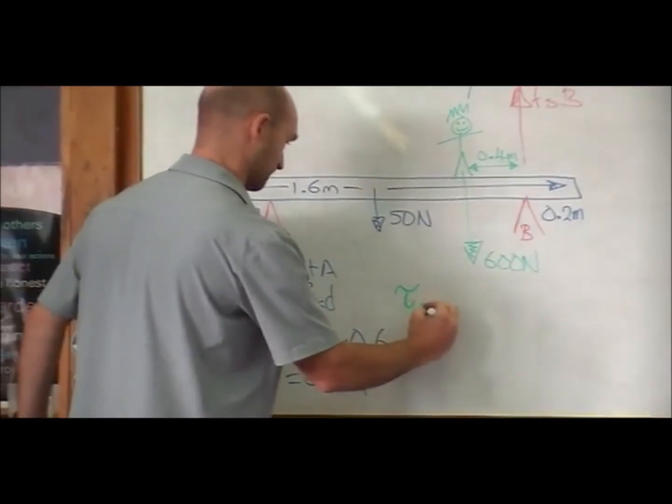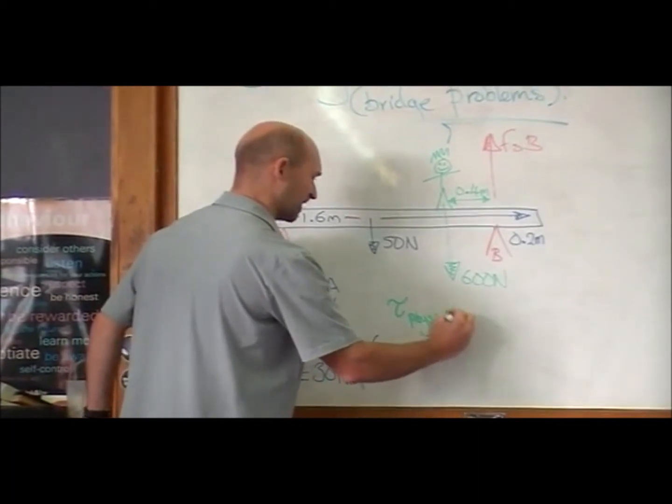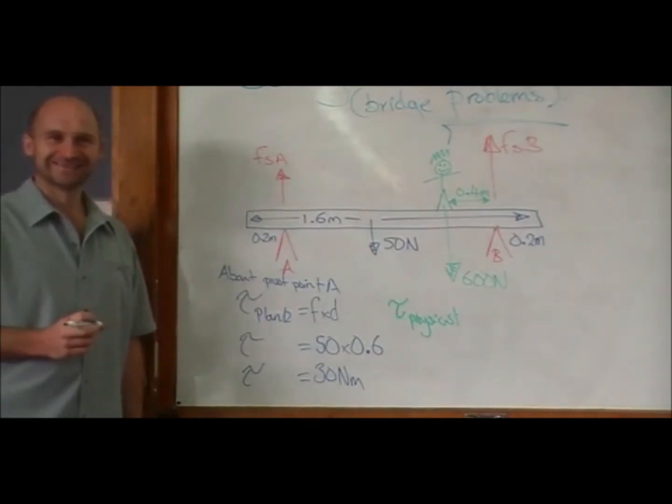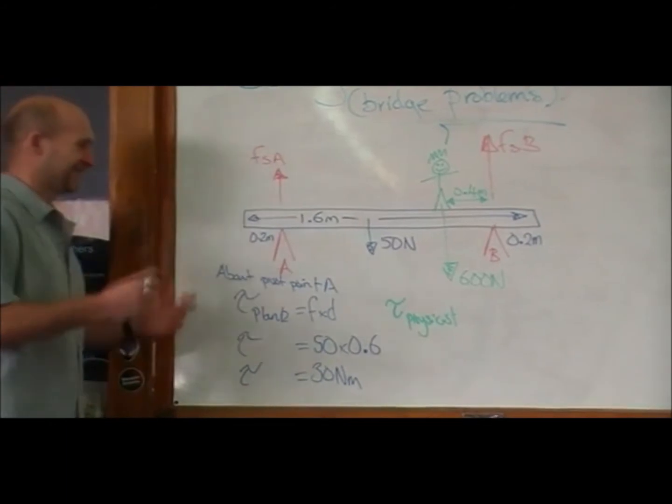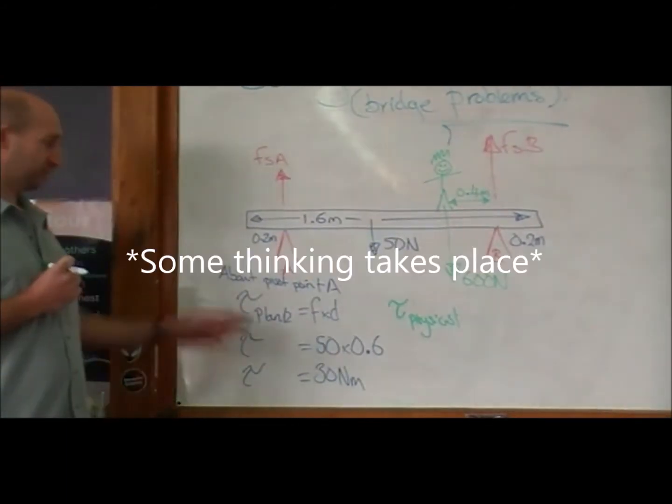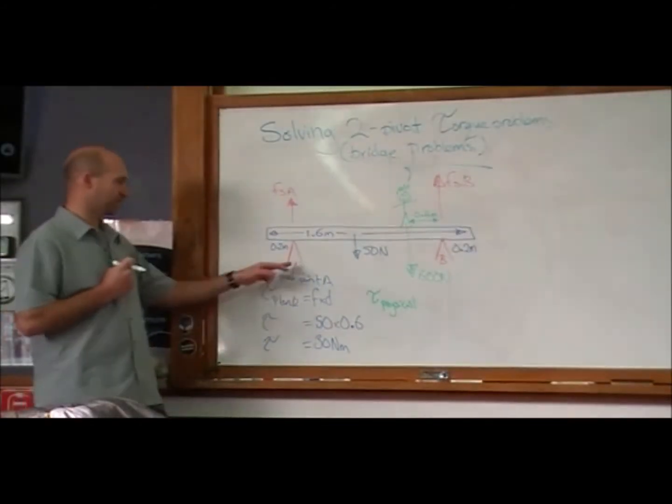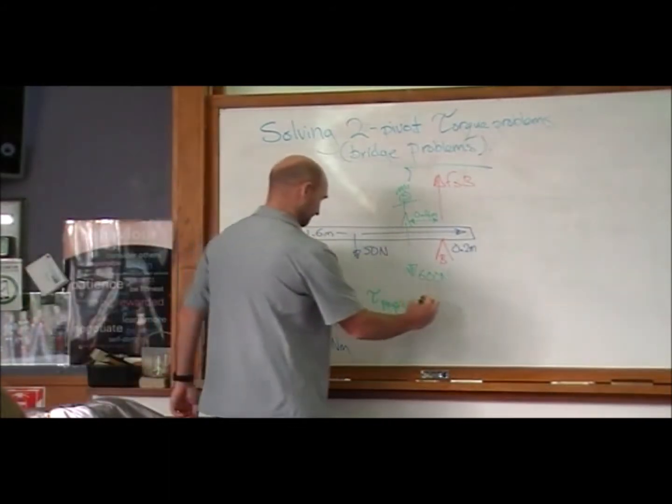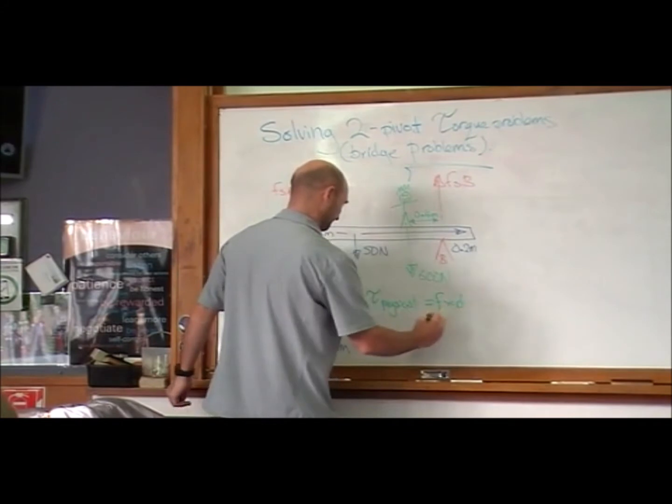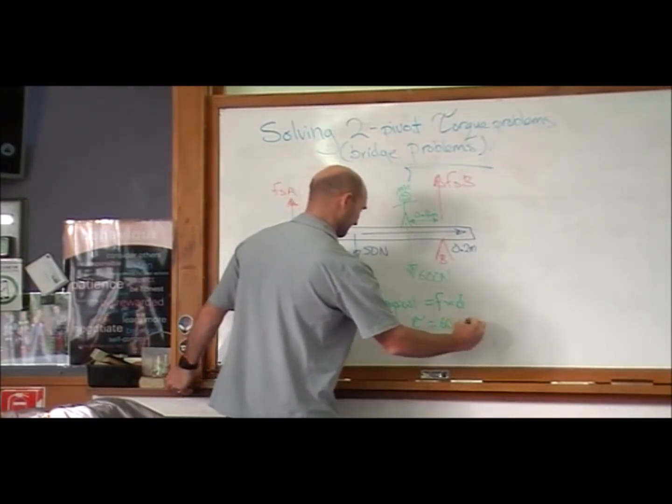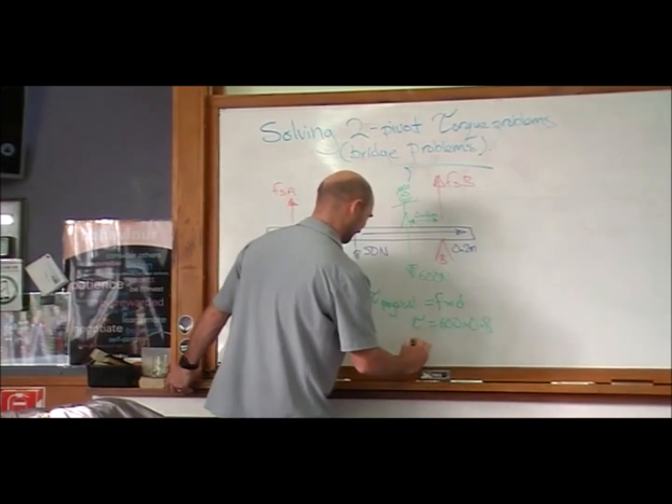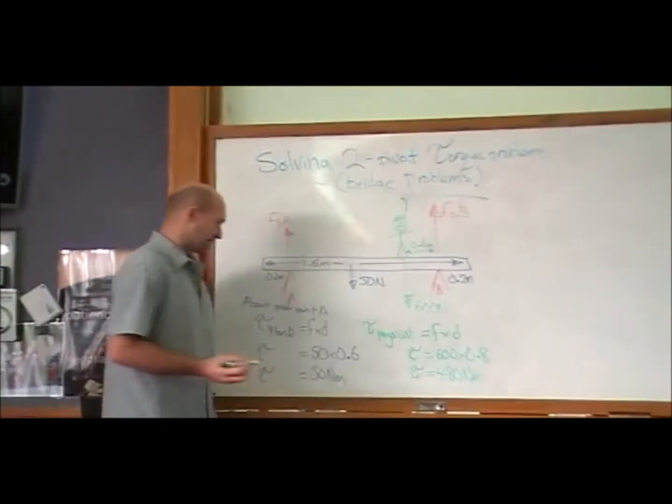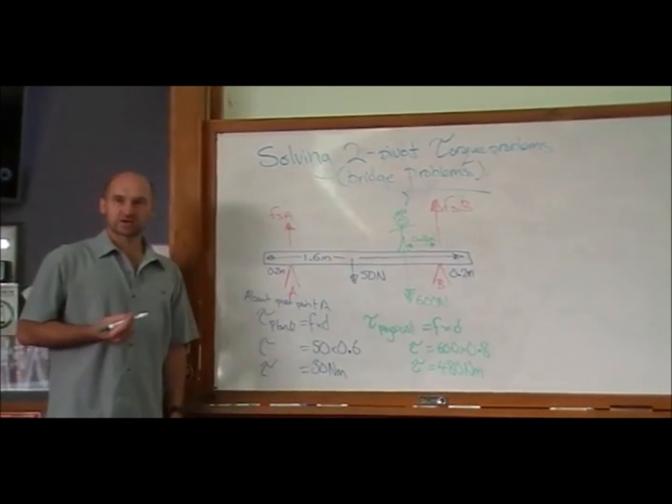And what about the torque of the brave physicist? Brave... don't you mean racist? Cut that out. What's the distance to the physicist? 1.2. Yeah, it's easy. And so we've got a torque of 30 newton-meters because of the plank and 480 newton-meters because of the physicist.